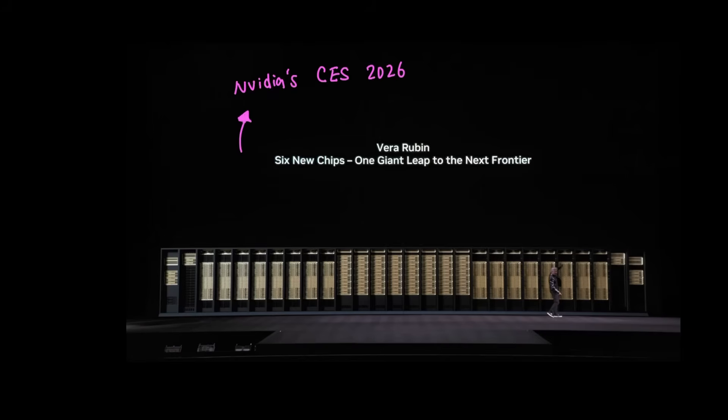NVIDIA's CES 2026 was mostly around robots and AI agents, but the most important of them all was the Rubin platform that released six different chips.